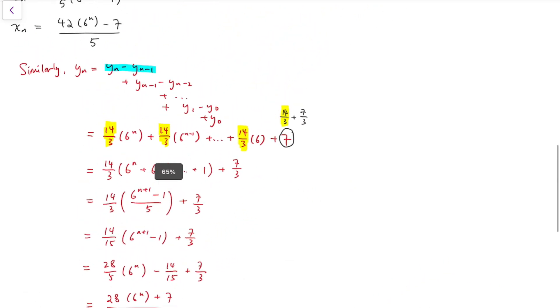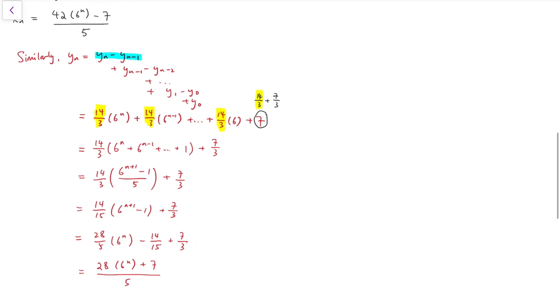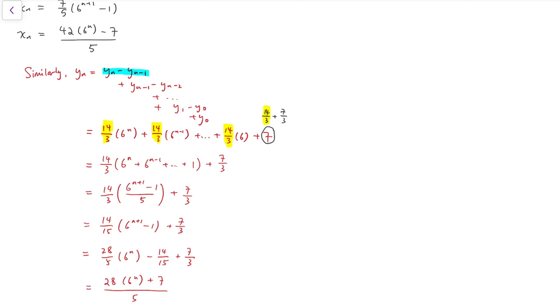So summing up, we have xn equals 42 times 6 to the power n minus 7 all divided by 5. And yn equals 28 times 6 to the power n plus 7, all divided by 5. So I can rewrite the fraction as just removing the over 5s on both numerator and denominator. And we can see that the limit of this fraction as n goes to infinity will be equal to 42 over 28. Because the 6 to the power n term dominates both entries. So our final answer is 3 over 2.